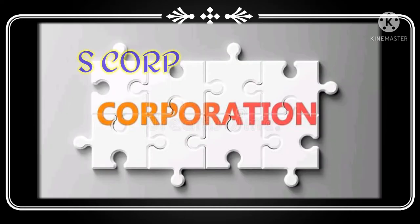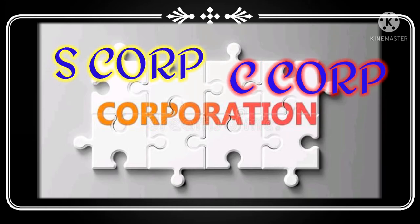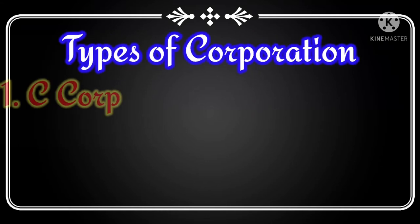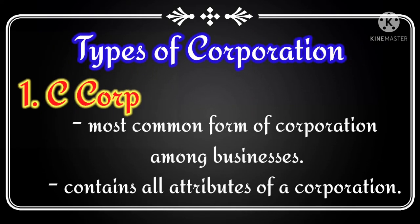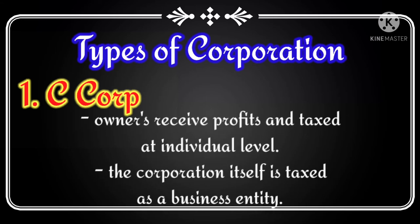A corporation can be an S-Corp, a C-Corp, or a professional corporation. C-Corp is the most common form of incorporation among businesses and contains almost all of the attributes of a corporation. Owners receive profits and are taxed at the individual level, while the corporation itself is taxed as a business entity.